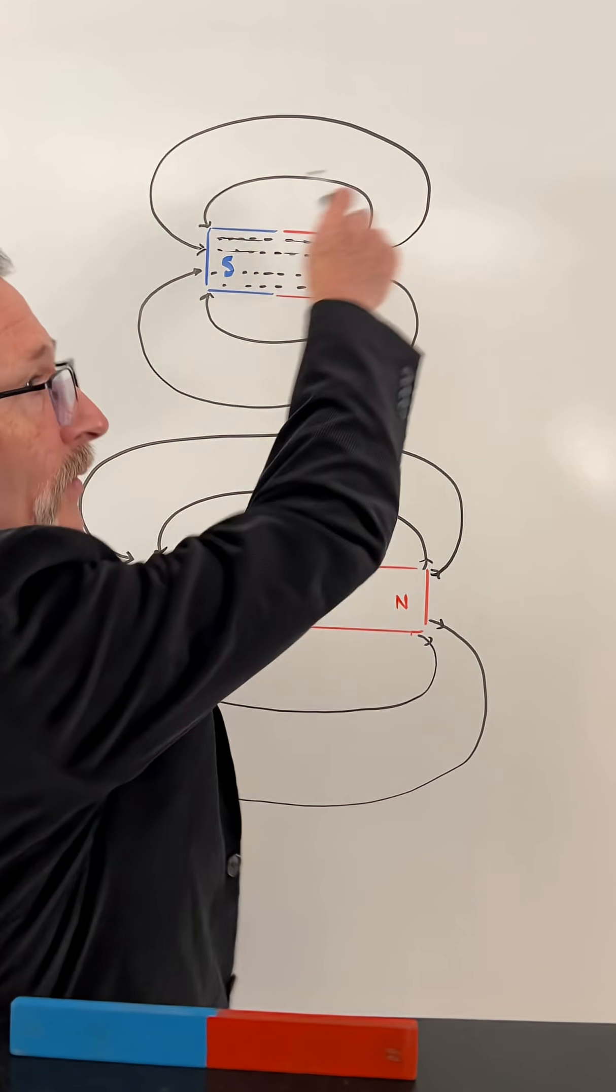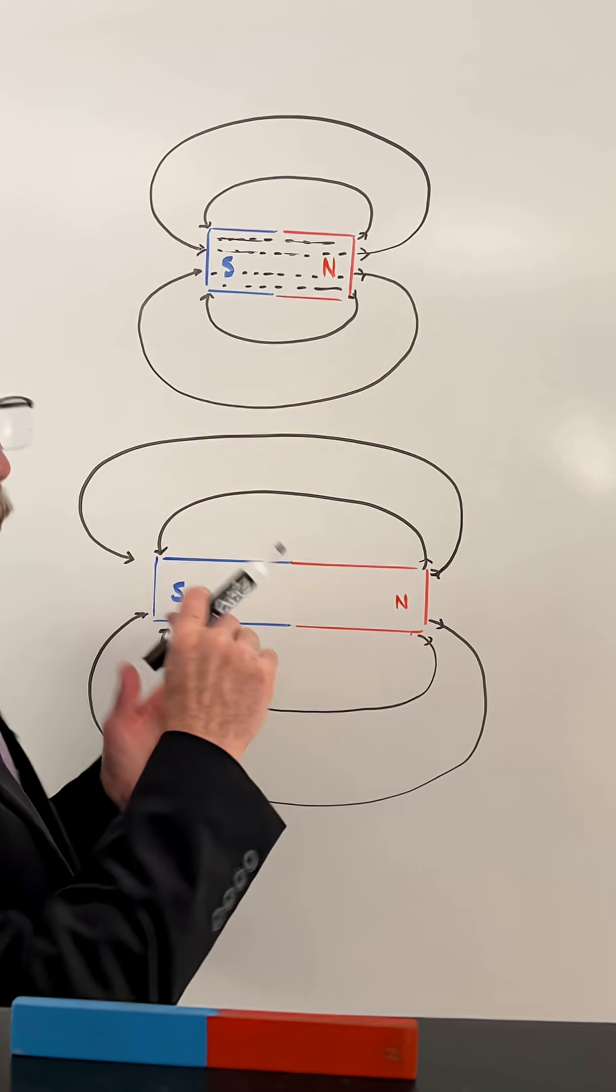To help us understand that, let me draw it out. Now we have field lines that are going to emerge from the north and go into the south. But what causes this?